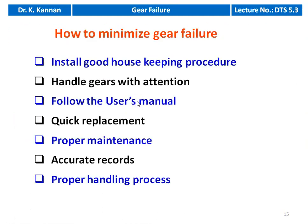To minimize gear failure, there are different methods: install good housekeeping procedures for gear maintenance; handle the gear with care; follow the user's manual; quick replacement — when there is a small disturbance, failure, or wear observed in the gear blank, immediately replace the gear; follow proper maintenance procedures; and maintain accurate records of failures, including lubricant temperature, lubricant pressure, what additives are being used, and how periodically the lubricant is being replaced.